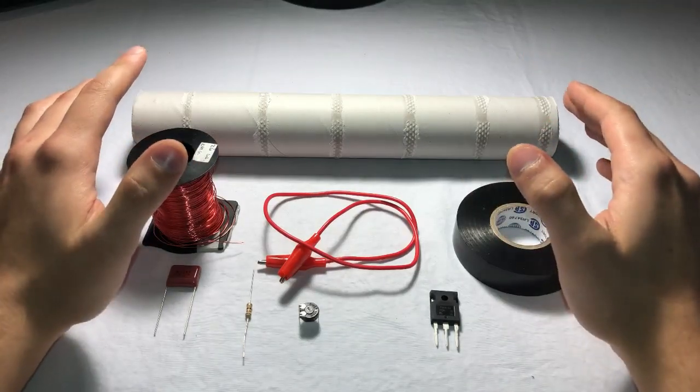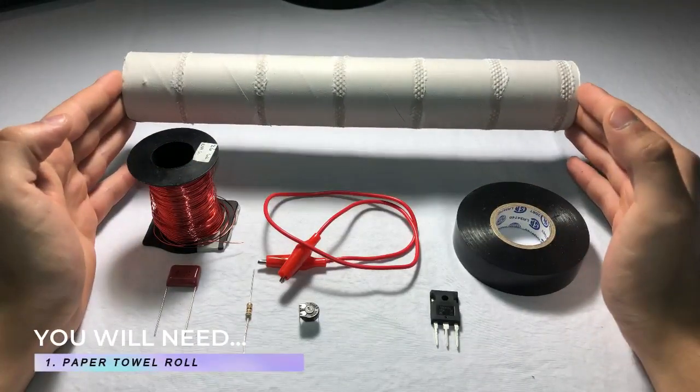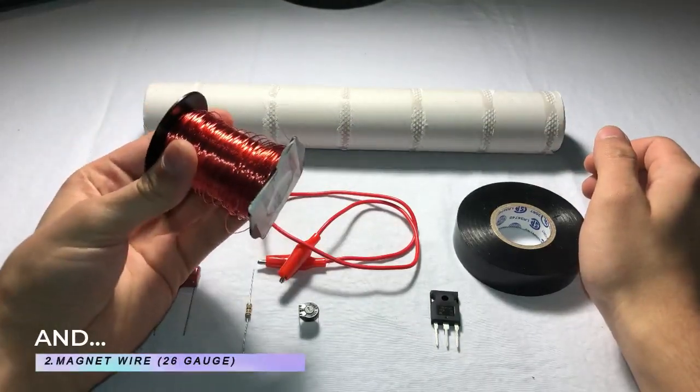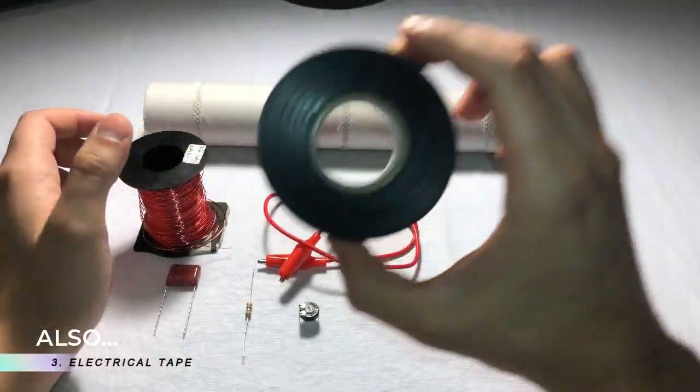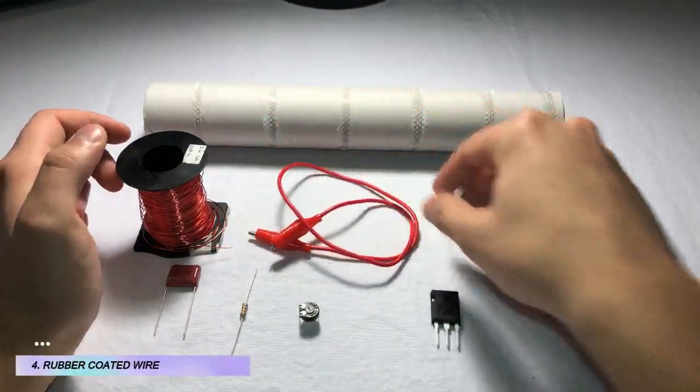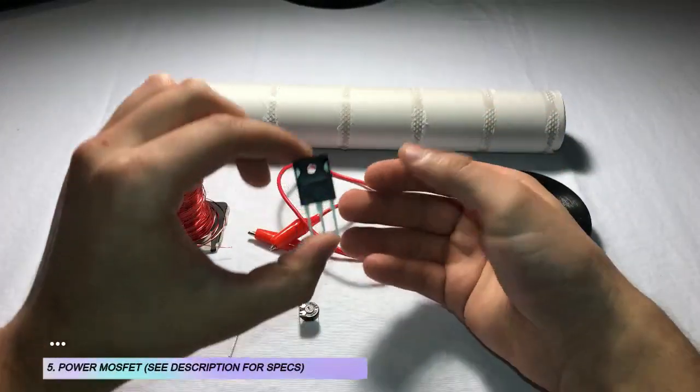So this is all the parts that we'll be needing to create this build. We got our paper towel roll, just a cardboard part, some magnet wire, I'm using 26 gauge, some electrical tape,